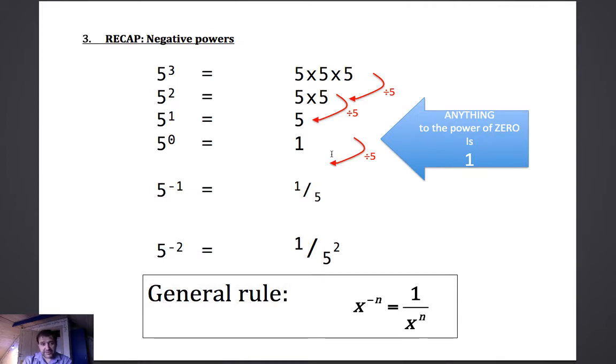But then we take that a step further. The next one, for that pattern to continue, should be 5 to the power of minus 1 equals 1 divided by 5, which is a fifth.